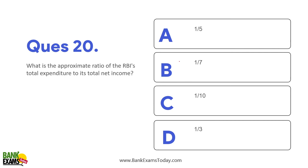What is the appropriate ratio of RBI's total expenditure towards net income? It is one-seventh, and the rest of the money — some is kept as reserves and the remainder is given to the Government of India for development causes.